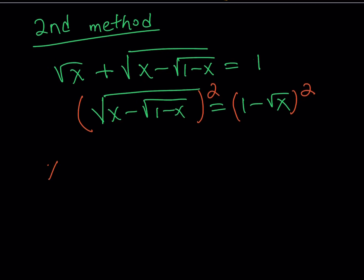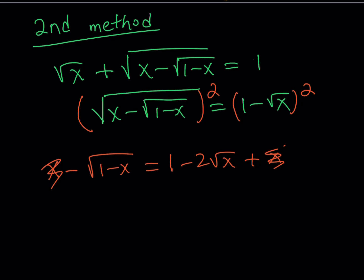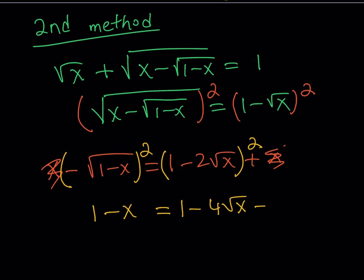Squaring both sides, the radical cancels and we get x minus square root of (1 minus x) equals (1 minus square root of x)², which expands as 1 minus 2 root x plus x. The x's cancel out. Squaring both sides again gives 1 minus x on the left, and (1 minus 2 root x)² on the right, which expands as 1 minus 4 root x plus 4x. The 1's cancel, and putting x terms on one side gives 5x equals 4 root x.